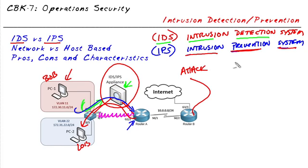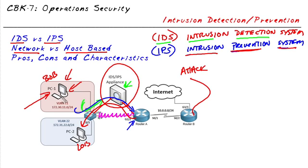These are both examples of network-based intrusion detection and prevention, because we're analyzing network traffic. There's also host-based intrusion prevention and detection, which involves running software on computers and servers, reading application logs, security logs, and the Windows registry — looking for any malicious behavior locally on that computer.